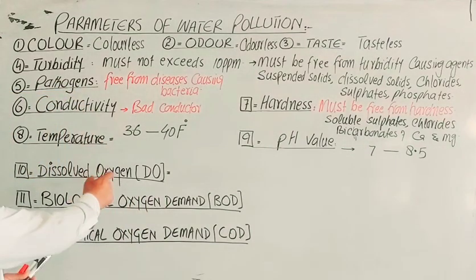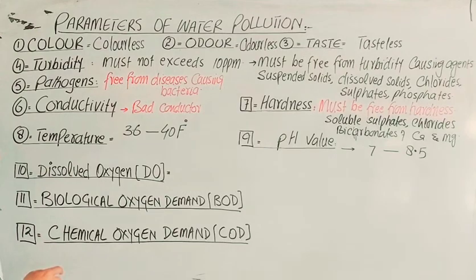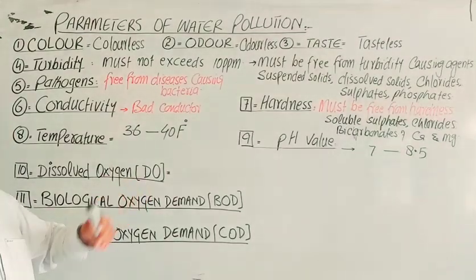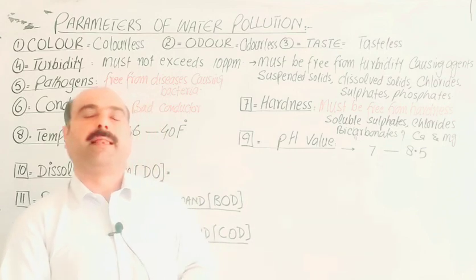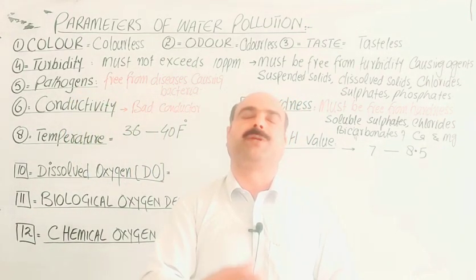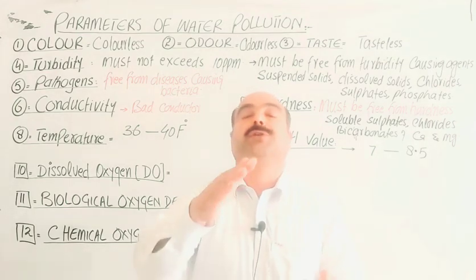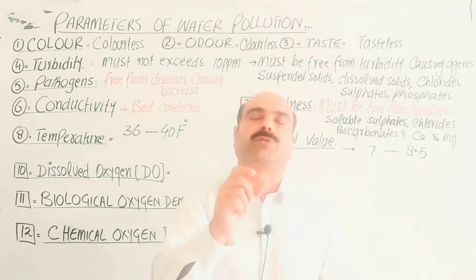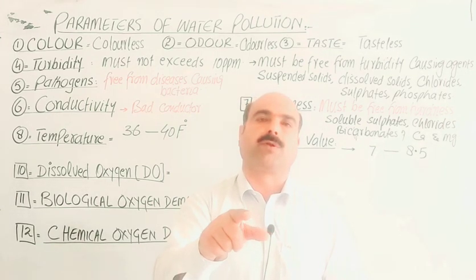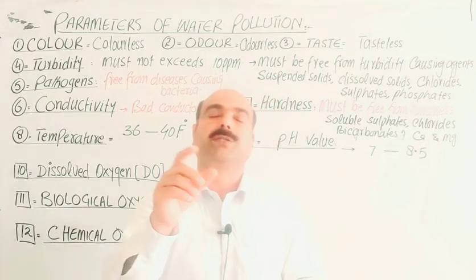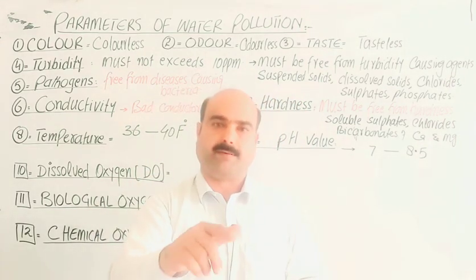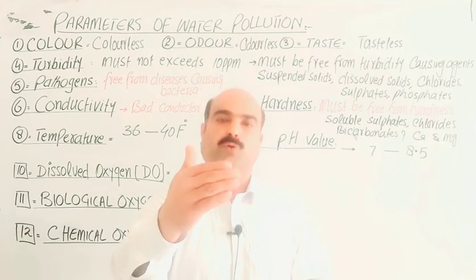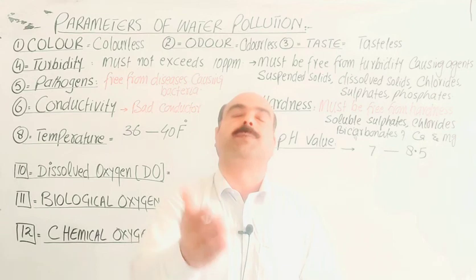Dissolved oxygen: the last three parameters will be discussed in detail in a separate video. Dissolved oxygen in water is essential for aquatic life — for photosynthesis of plants and respiration of plants and animals. It is absorbed from the atmosphere, and aquatic plants also produce oxygen during photosynthesis. This dissolved oxygen is present in water in dissolved form.